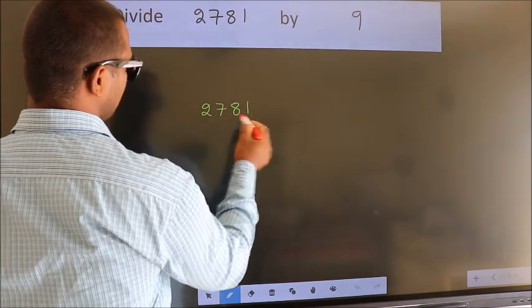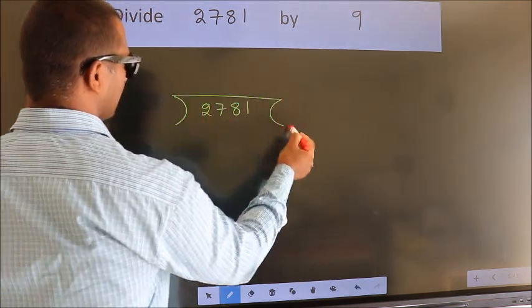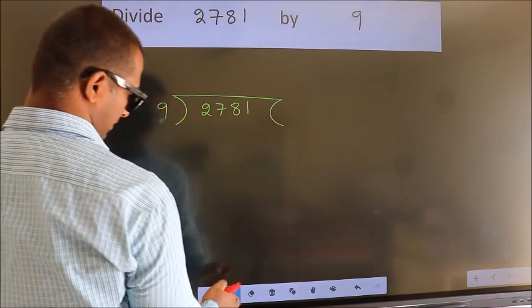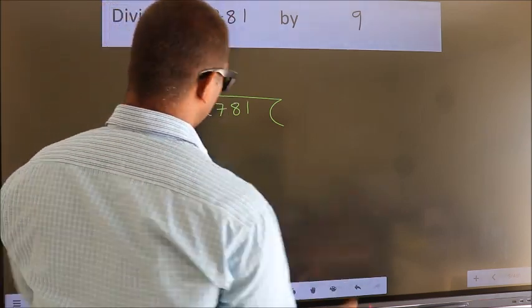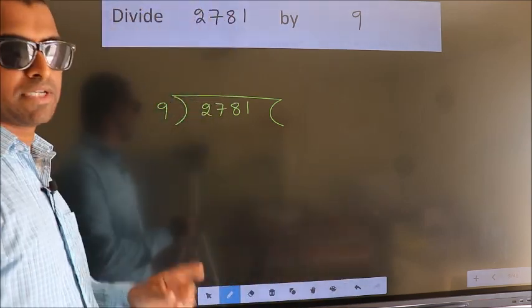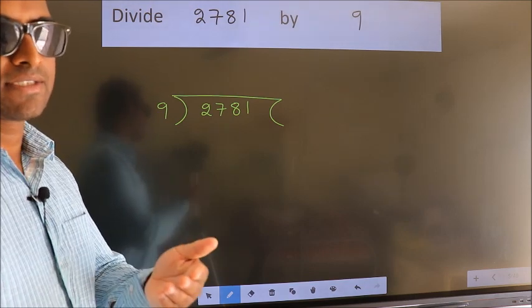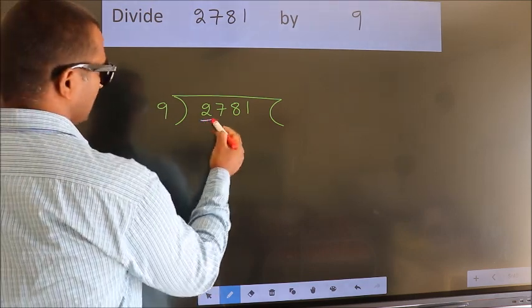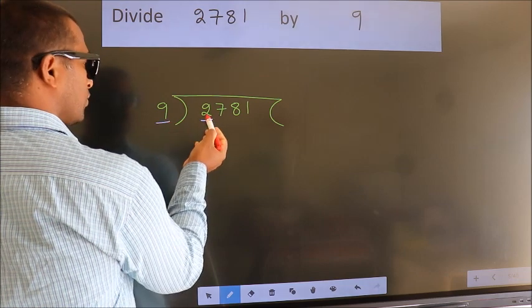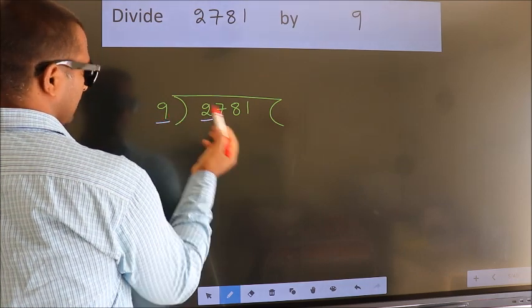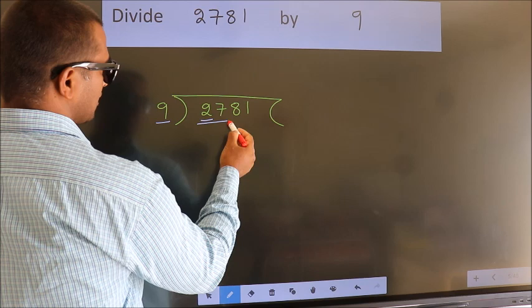2781 here, 9 here. This is your step 1. Next. Here we have 2. Here 9. 2 smaller than 9. So we should take 2 numbers, 27.